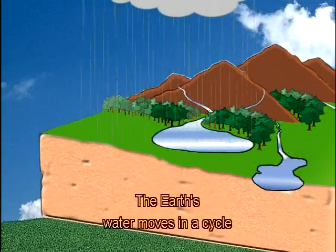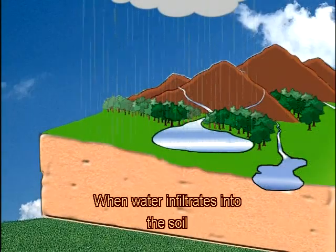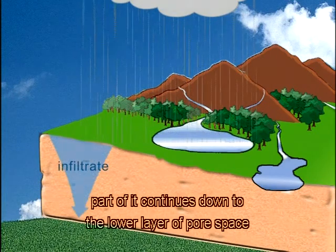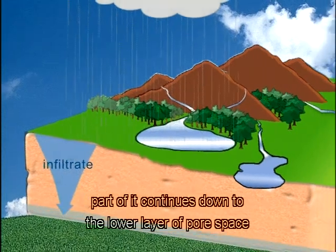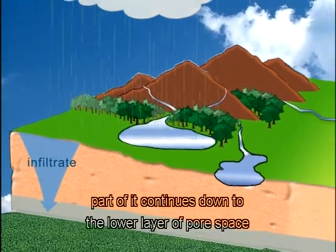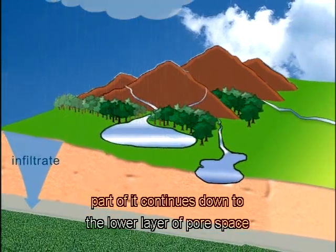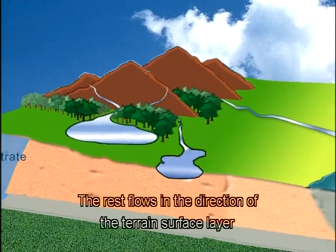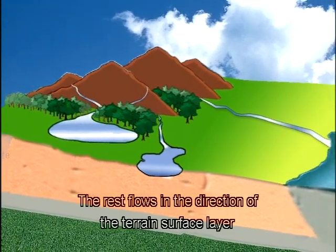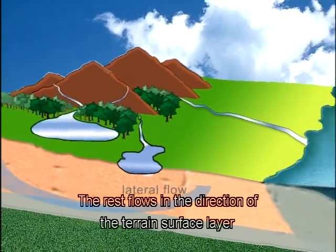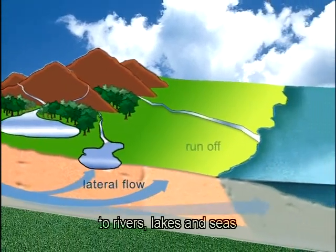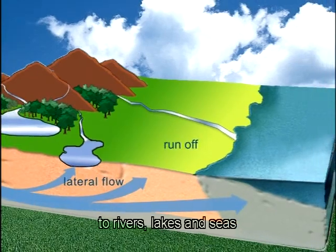The Earth's water moves in a cycle. When water infiltrates into the soil, part of it continues down to the lower layer of pore space to become groundwater. The rest flows in the direction of the terrain surface layer to rivers, lakes and seas.